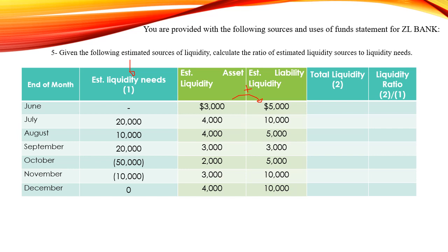The total liquidity sources equal asset liquidity plus liability liquidity. The liquidity ratio is the total liquidity sources divided by the estimated liquidity needs. For June, we have $3,000 plus $5,000 equals $8,000, but since we don't know the estimated liquidity needs for June, we cannot determine the ratio. For July: 4 plus 10 equals 14 thousand, divided by 20 thousand, giving 0.7. For August: 4 plus 5 equals 9 thousand, divided by 10 thousand, giving 0.9.